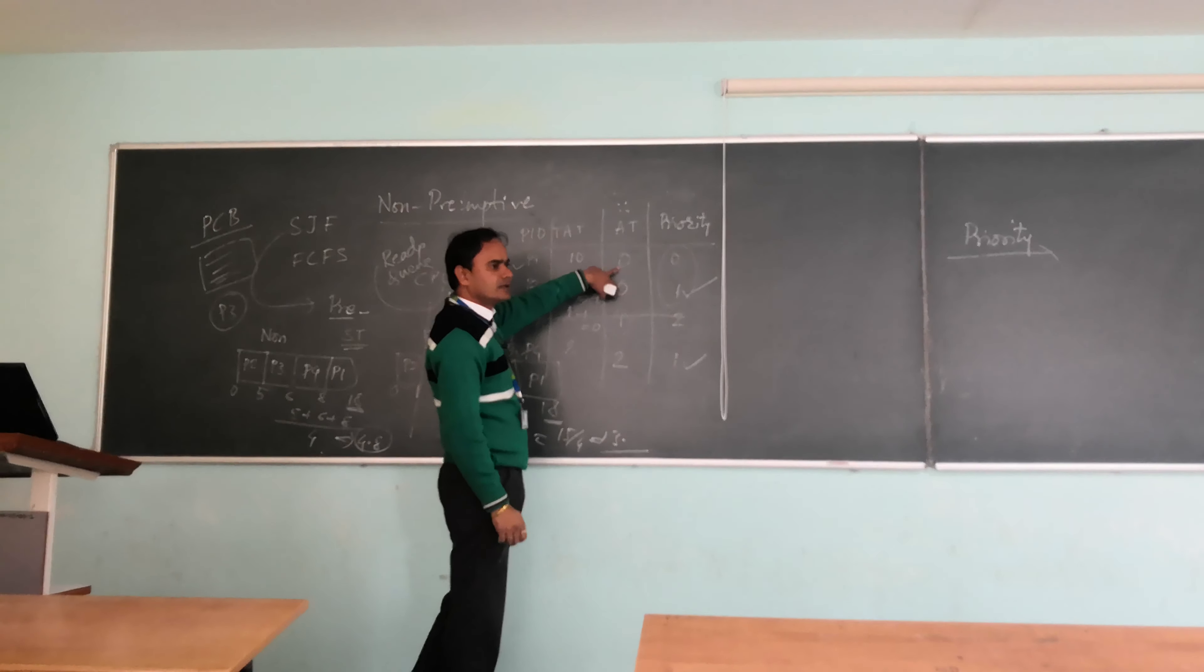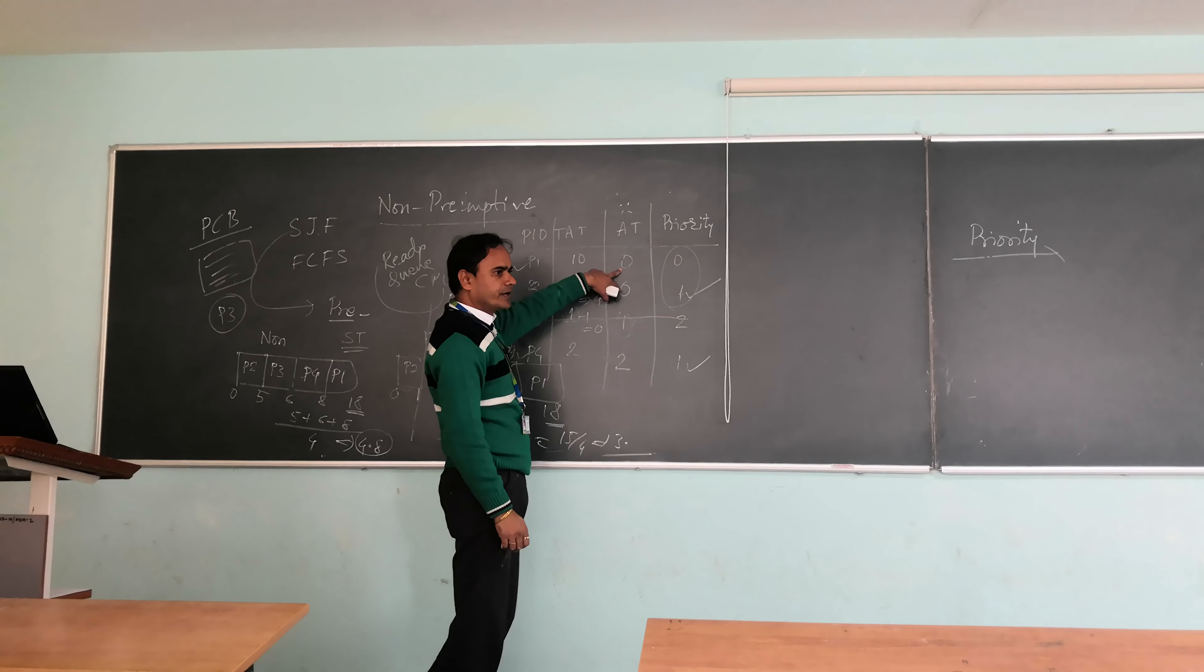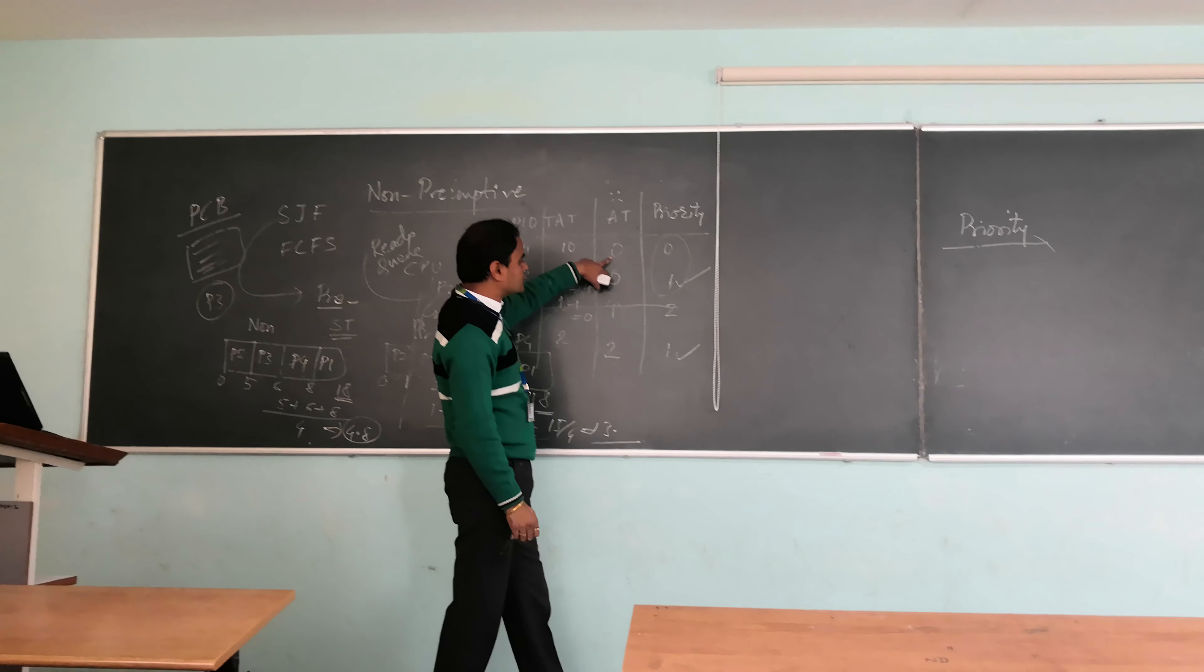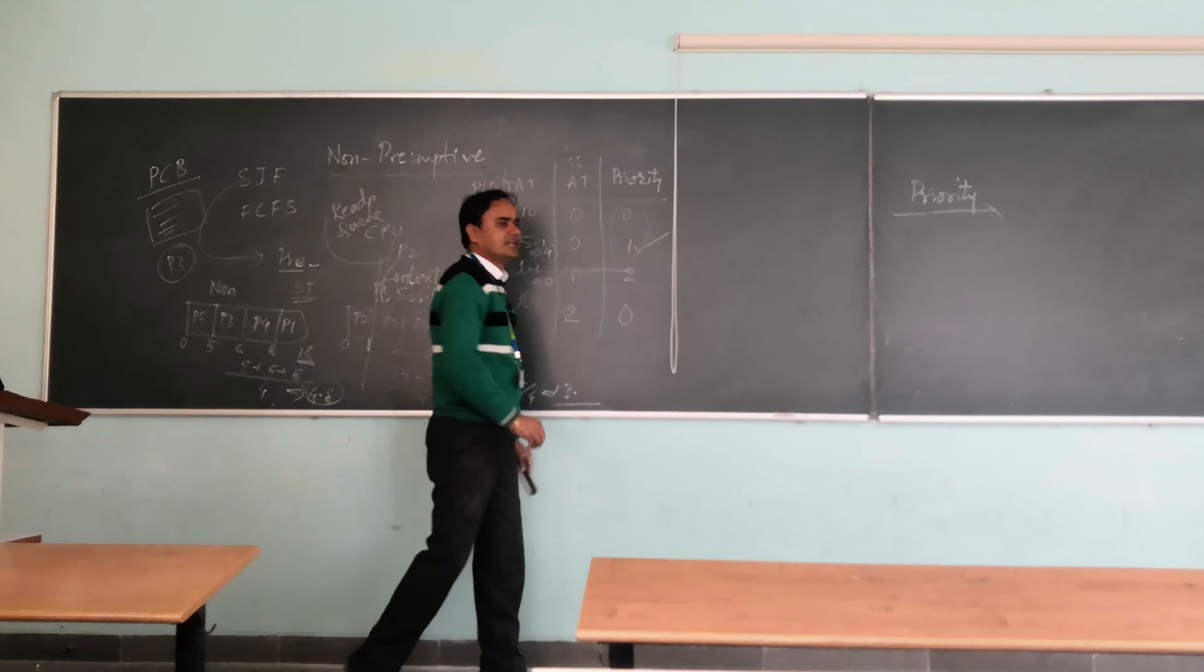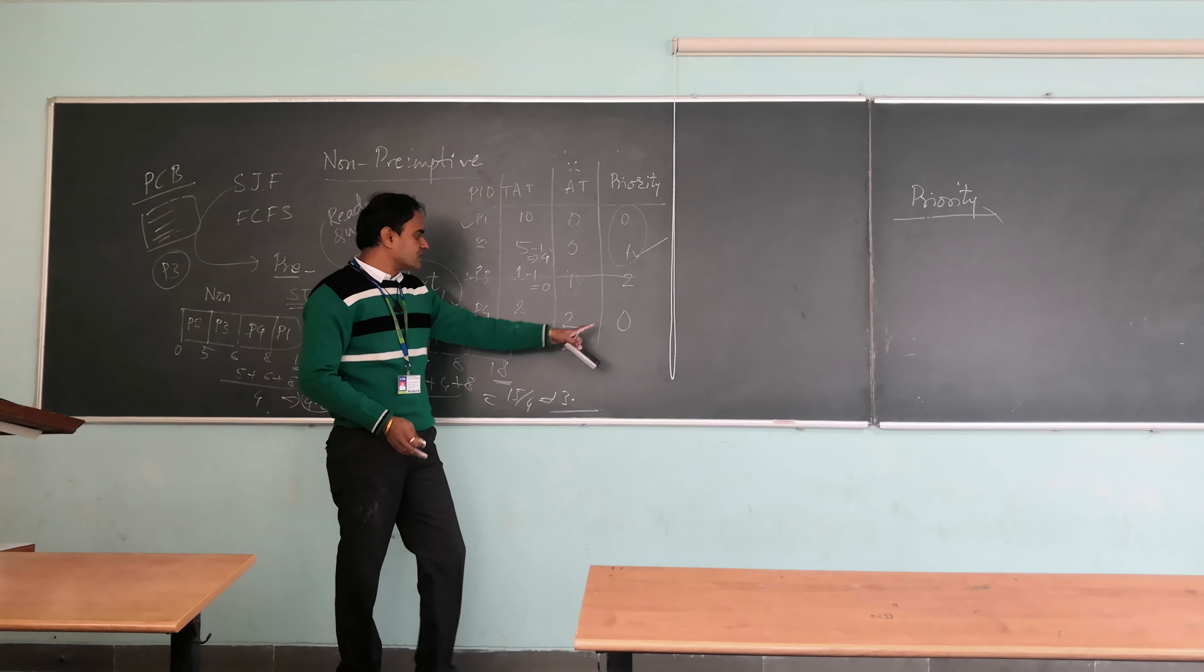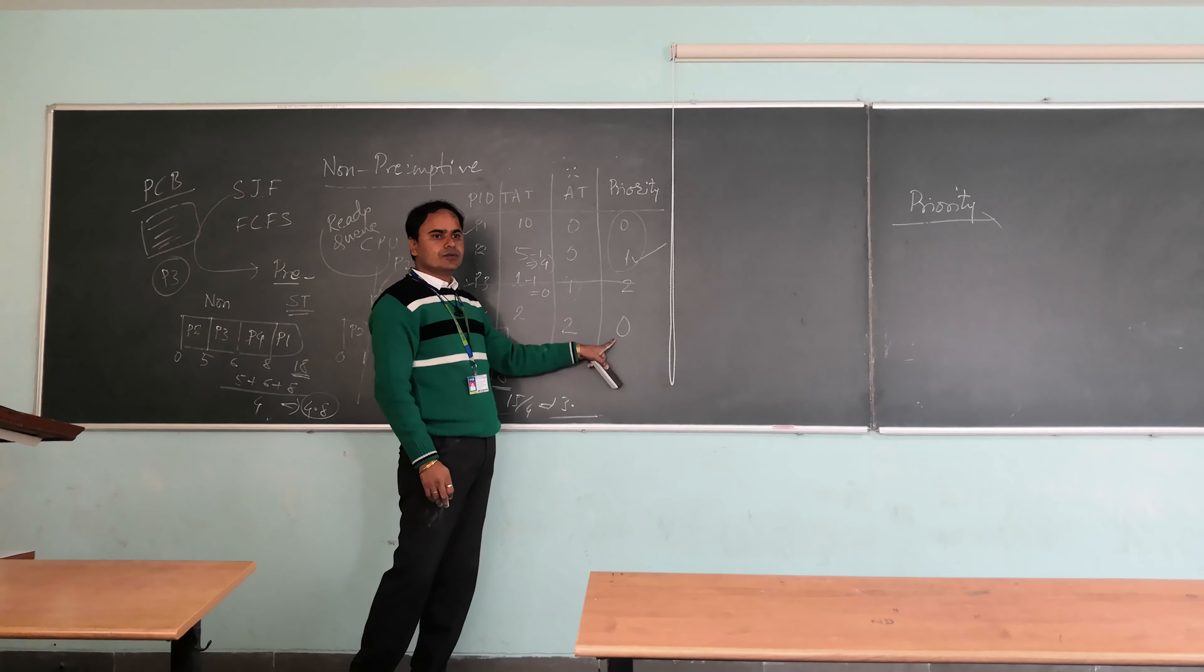It will be there at zeroth time. So which priority is lower? I will just change the priority here. I will make zeroth priority to understand it better. I will make its priority as 0.